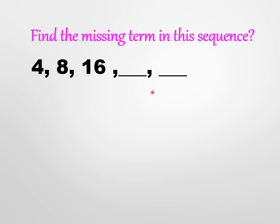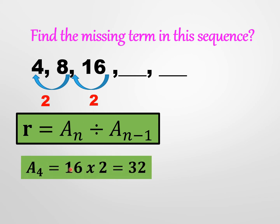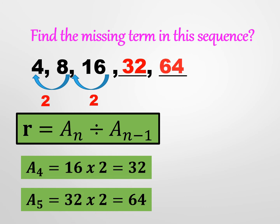Given a geometric sequence, we need to find the missing terms. First, find the common ratio by dividing a succeeding term by its preceding term: 8 divided by 4 equals 2, and 16 divided by 8 also equals 2. So the common ratio is 2. We then multiply 16 by 2 to get the fourth term: 32. And 32 times 2 gives the fifth term: 64.